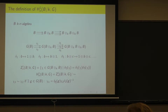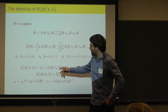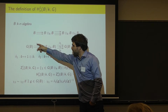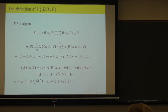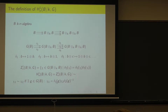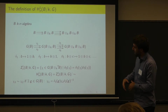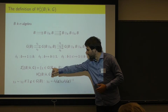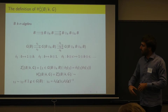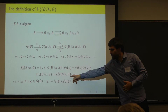H1 is in general just a set with a distinguished point — the class of the identity, which is always a cocycle. But if G is abelian, the set naturally carries the structure of an abelian group. The definition of H1 only depends on B, G, and the base k. This H1 depends on B, and it classifies exactly those torsors that become trivial over B — meaning they have a point in B.